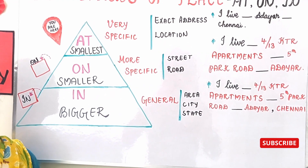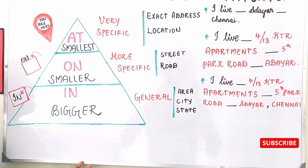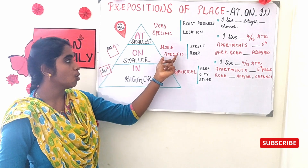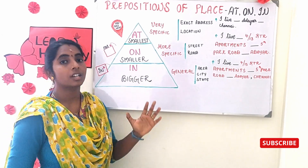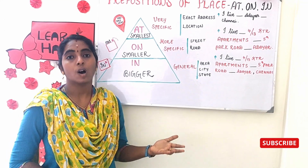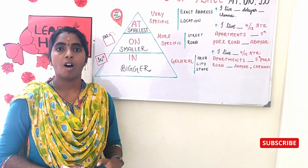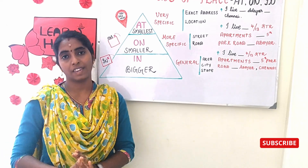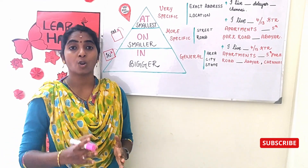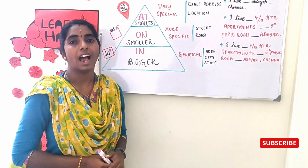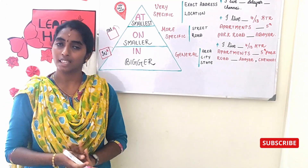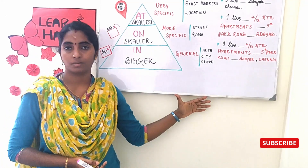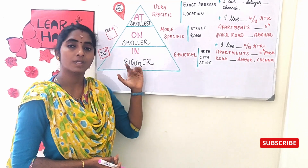So 'at' is used for a very specific area — an exact address or location, exactly where you are standing. For example: I live at Barkham Apartments. Next, 'on' is used when you want to denote the street or road you live on — for example, I live on Third Main Road, or I live on Park Street. For denoting your area name, city, or town — the more general, larger places — you use 'in.'